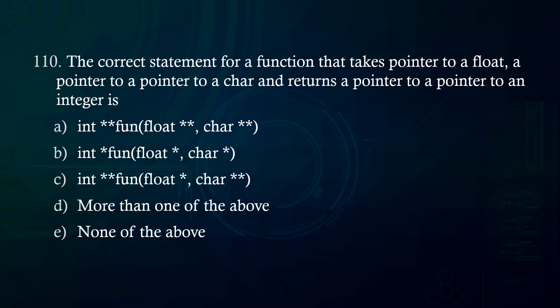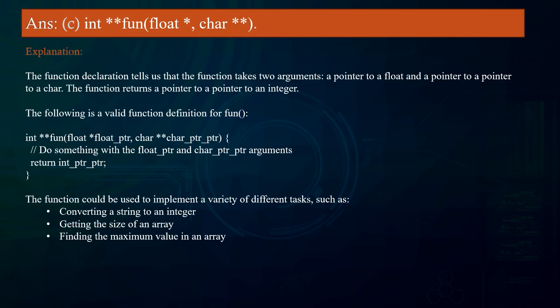The correct statement for a function that takes a pointer to a float, a pointer to a pointer to a char, and returns a pointer to a pointer to an integer is: Answer: int** fun(float*, char**). Explanation: The function declaration indicates two arguments — a pointer to a float and a pointer to a pointer to a char — and returns a pointer to a pointer to an integer.